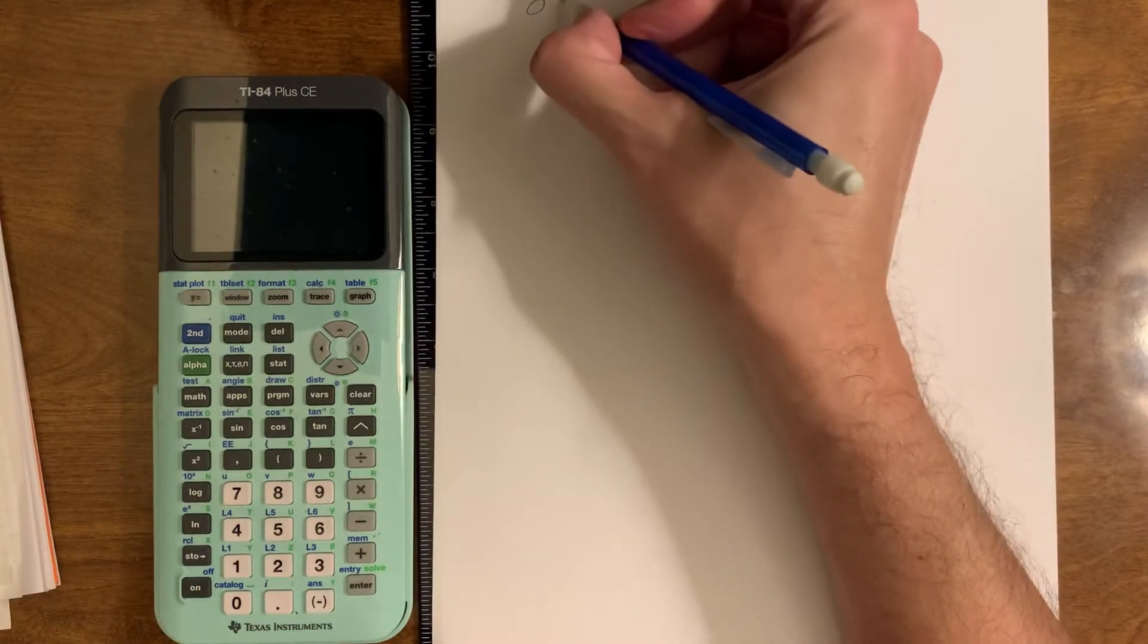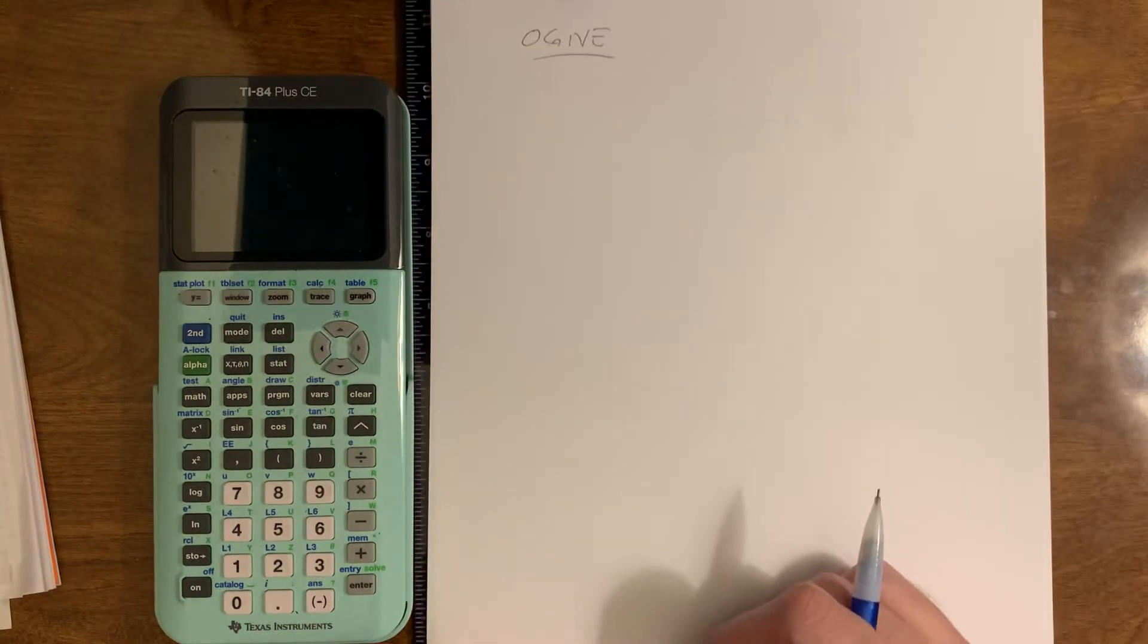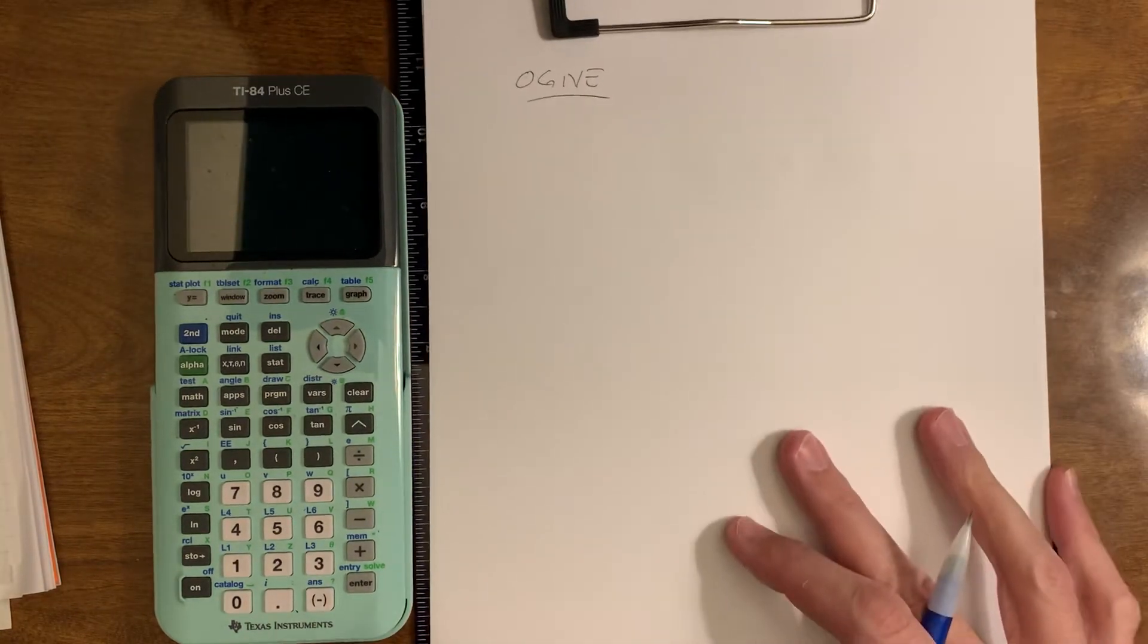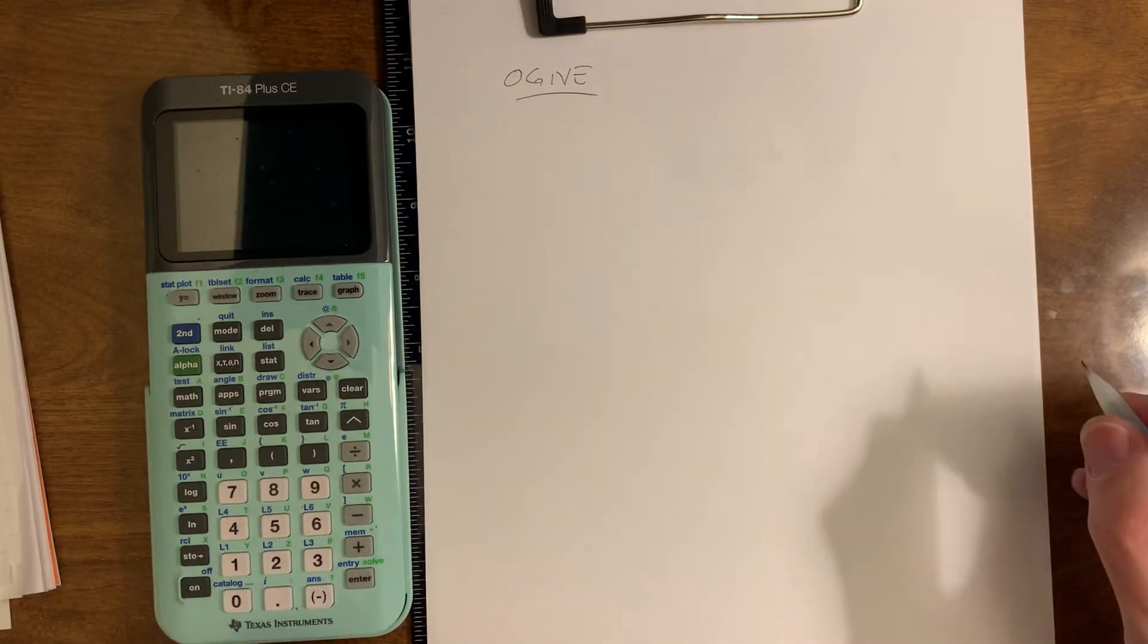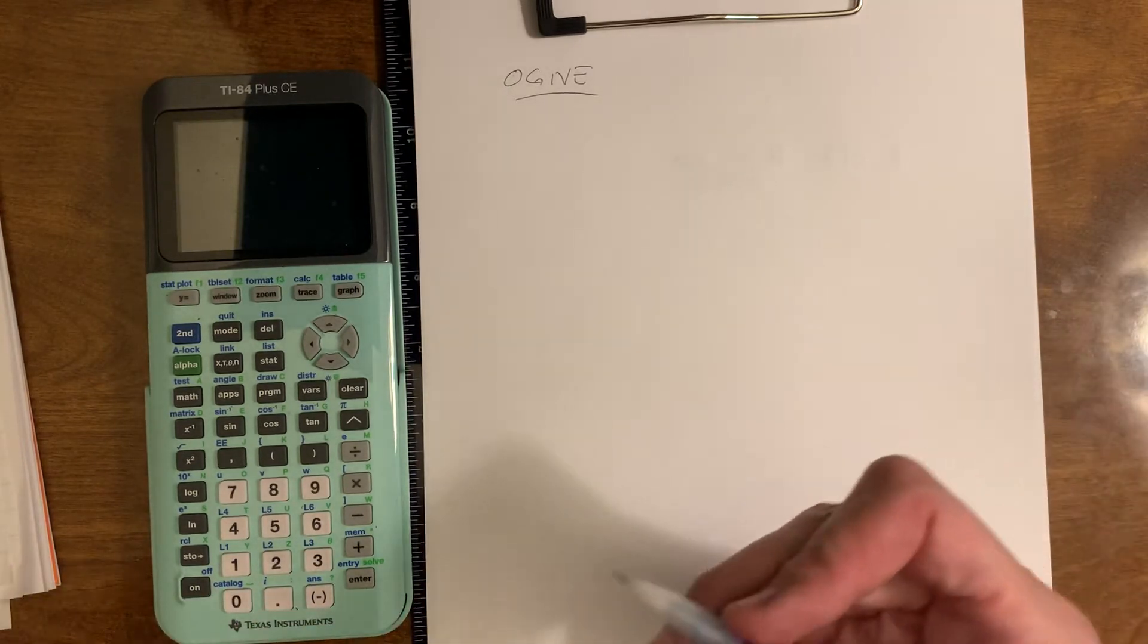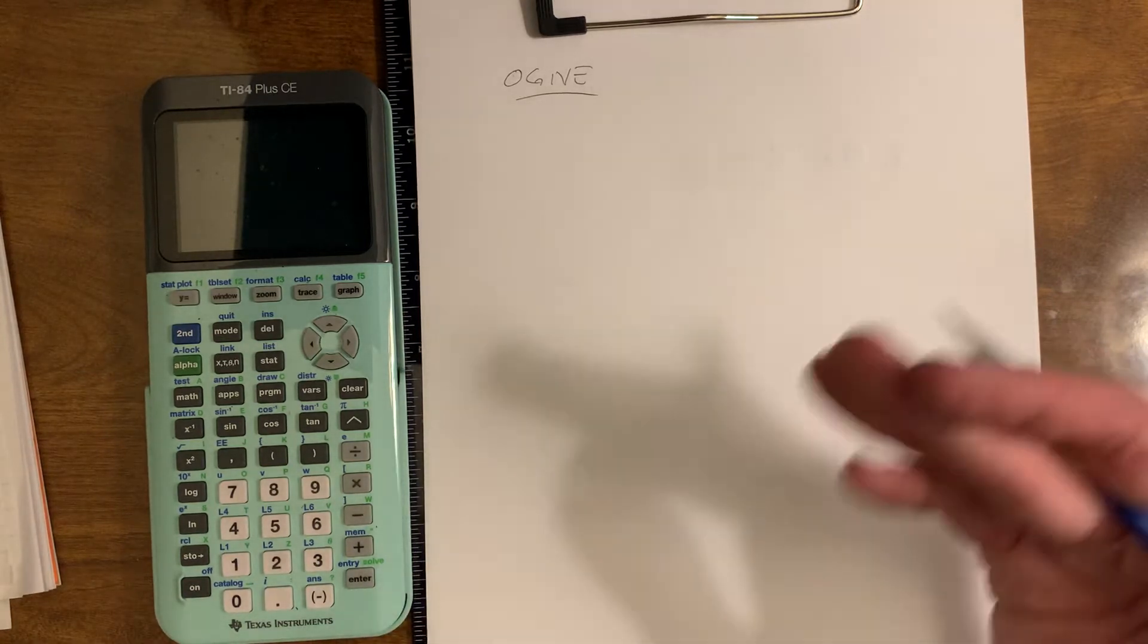Good morning and welcome to AP Statistics. Today we're going to discuss how to make an ogive. An ogive is O-G-I-V-E, ogive. What does it mean? Well, an ogive is a cumulative relative frequency graph.